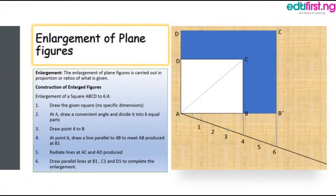Then we move on to the next subtopic: enlargement of plane figures. Enlargement of plane figures is carried out in proportion or ratio of what is given. Whatever we are given determines the extent to which we increase the plane figure. For example, enlargement of square ABCD in a ratio of 6 to 4. First, draw a square of no specific dimension, draw a convenient angle, and divide it into 6 equal parts. Draw a point B to point 6, then draw a parallel line to OB to meet AB produced at B1.